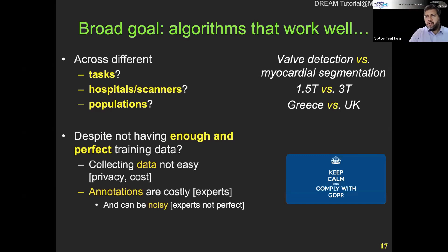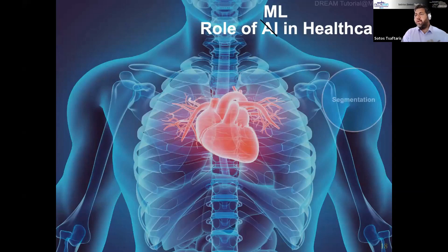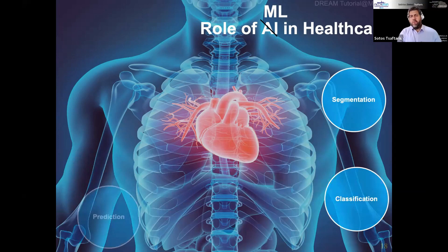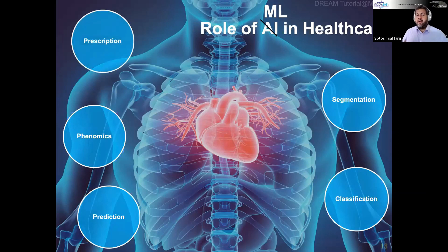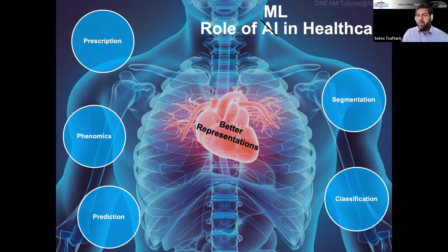If you think about the role of AI within healthcare, you can think of using machine learning for delineating pathology or anatomy, classifying the presence of disease, predicting the next evolution of events or the next state of a patient. Once we have a good understanding of information from images, we can combine them with genomics and do population phenomic studies to better understand disease. And once we understand the complexity of disease, we can start thinking of using AI to optimize and describe treatment. We are here to convince you that in order to do all of this, we need better representations.